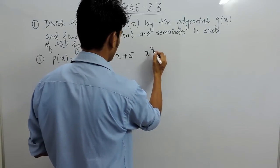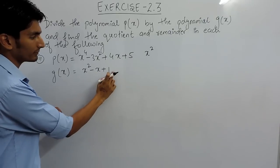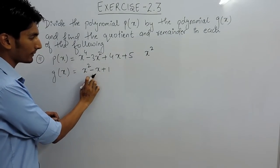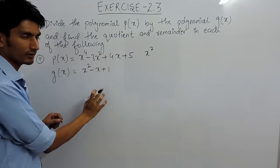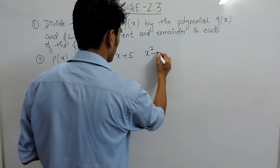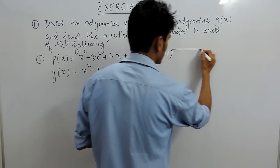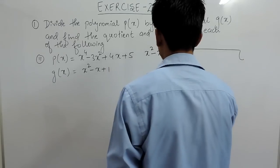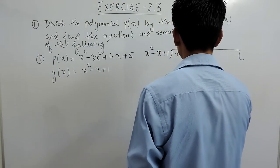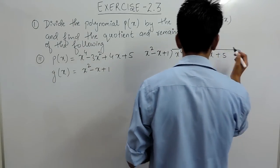This is x squared — basically x squared plus 1 minus x — so we have changed it into x squared minus x plus 1. These two are the same thing. So g(x) is x squared minus x plus 1. Now we divide it into x to the power 4 minus 3x squared plus 4x plus 5.